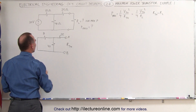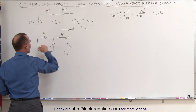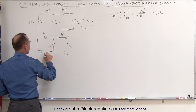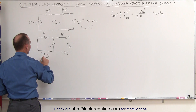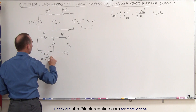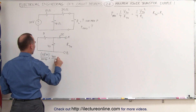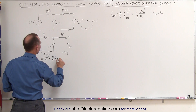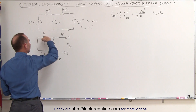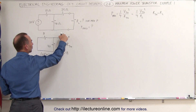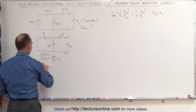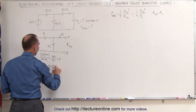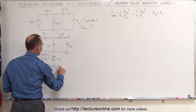The 25-ohm resistor is in series with those two parallel resistors. To find the equivalent resistance, we take the product over the sum: 10 times 40 over 10 plus 40, which is 400 over 50, which equals 8 ohms. Then R-Thevenin is equal to 8 plus 25, which is 33 ohms.